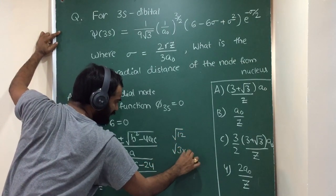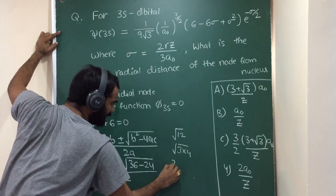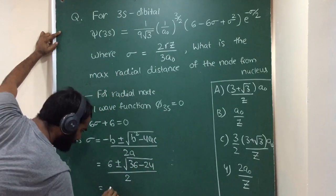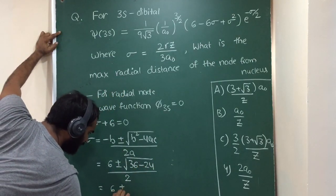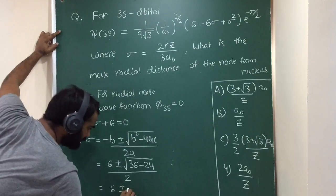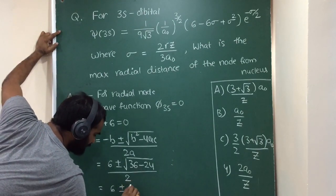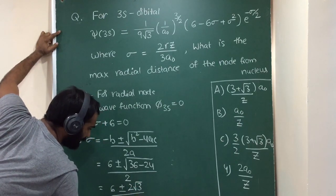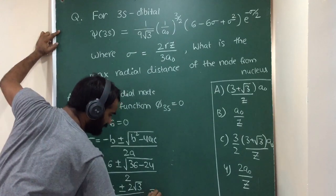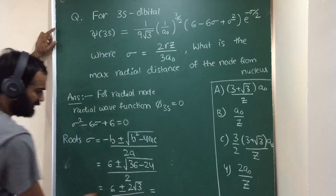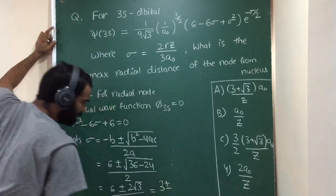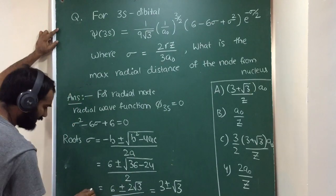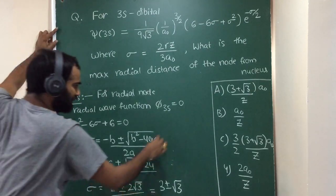Root 12 is equal to 2 root 3. Here sigma equals 3 plus or minus root 3.